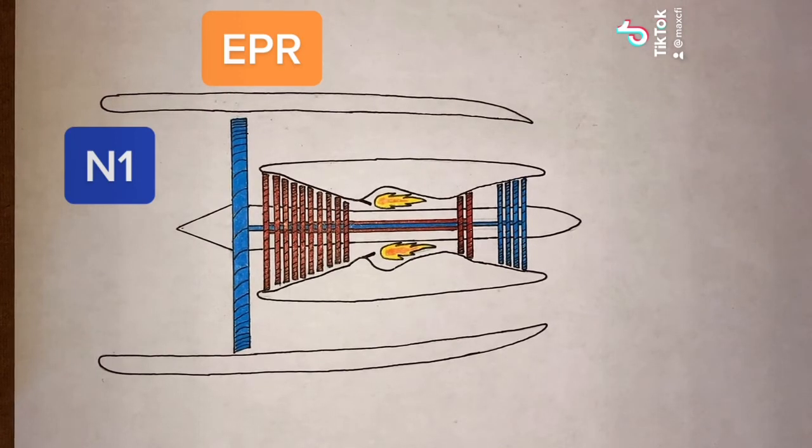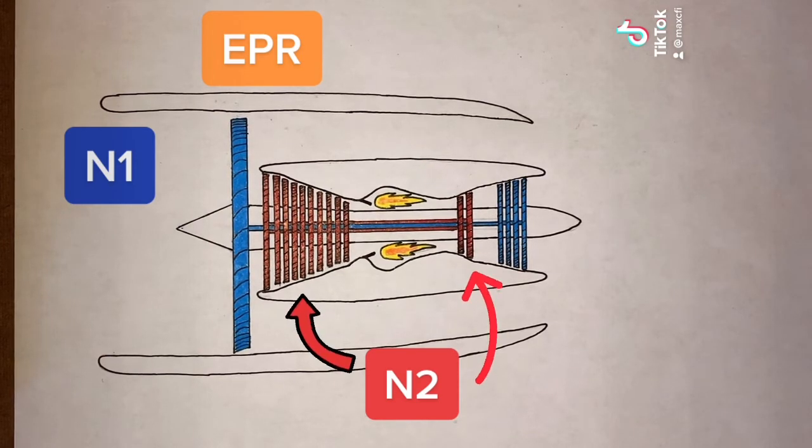Other engine indications are the N2 speed, or the rotation rate of the compressors, and some of the turbines, again expressed as a percentage of maximum RPM. In this drawing, that's the red spool.